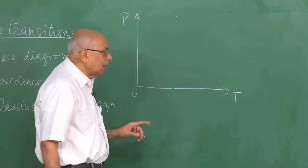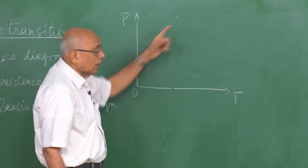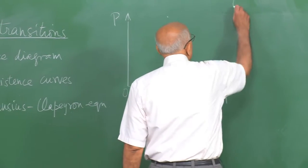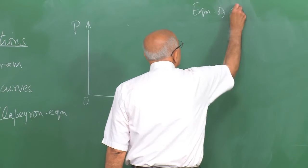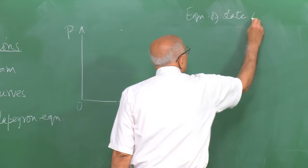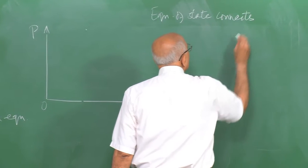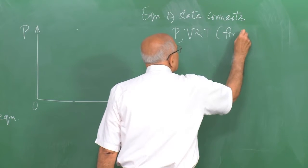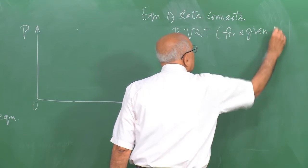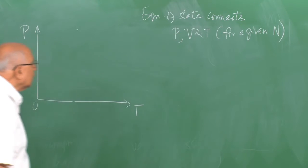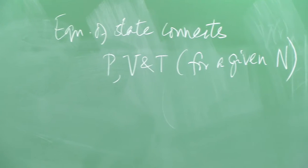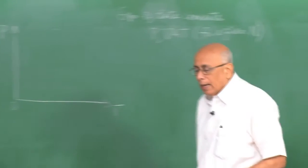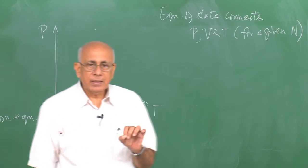The volume of the system is connected to P and T by the equation of state. So there exists a relation — an equation of state — connecting P, V, and T for a given amount of the substance, for a given N, the number of molecules in the system. We assume that such an equation of state exists, possibly much more complicated than the van der Waals equation, and every point on this plane is a thermodynamically stable system.